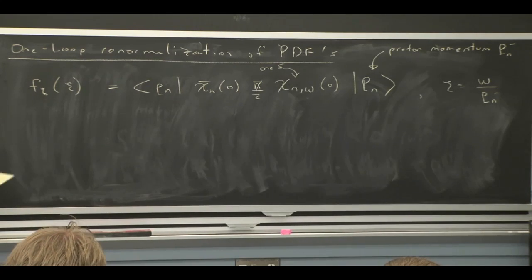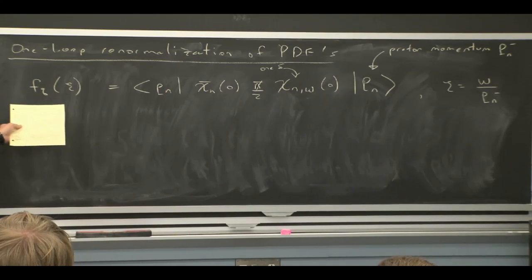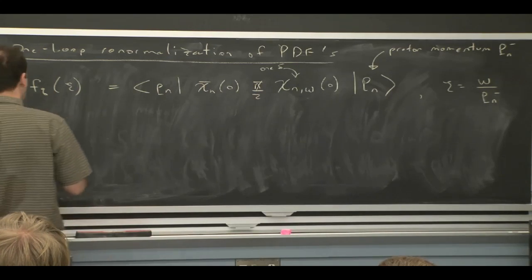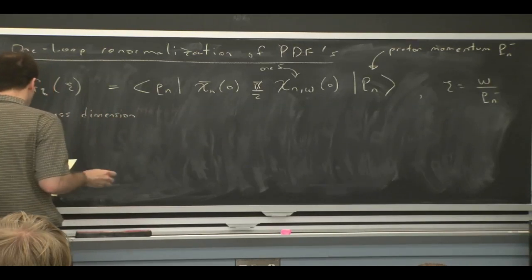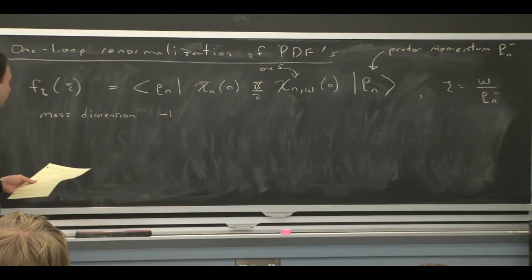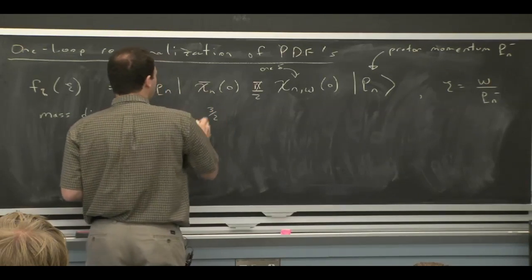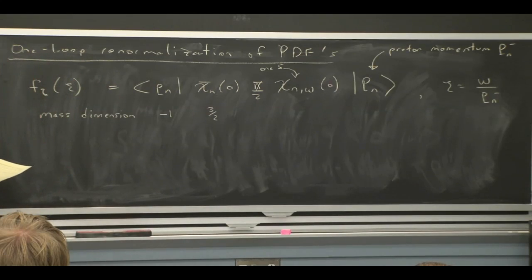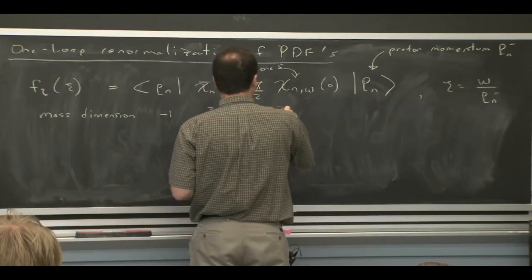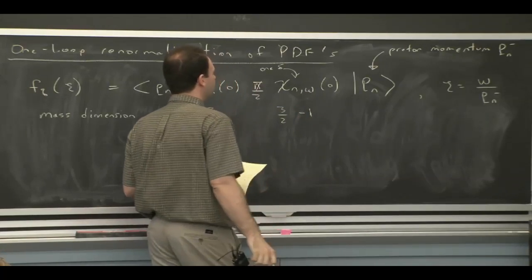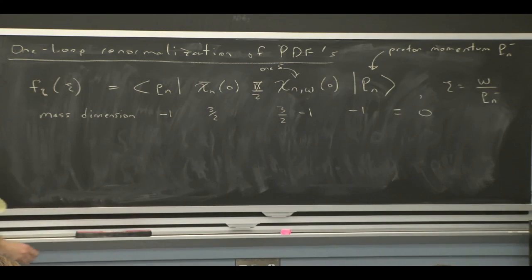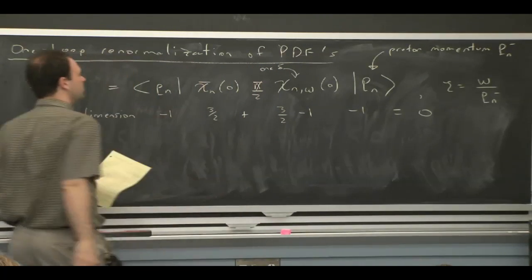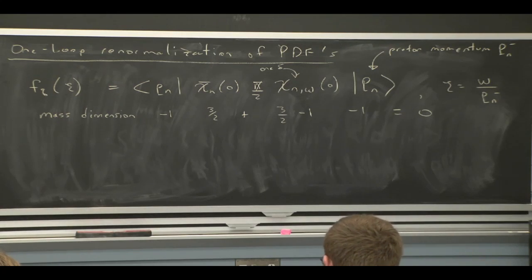The first thing to think about is mass dimensions. I'd already told you that this guy was dimensionless, but let's check. Relativistically normalized states have mass dimension minus 1. Quark fields without a delta function have mass dimensions 3/2. The delta function gives a minus 1, and then another minus 1, so you get 0. So 3/2 plus 3/2 minus three 1's is 0.